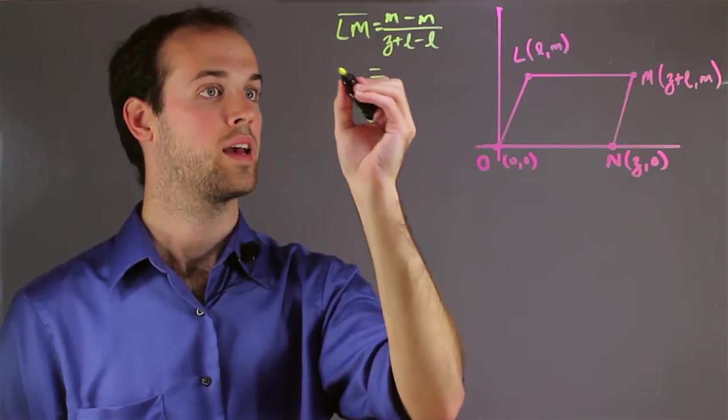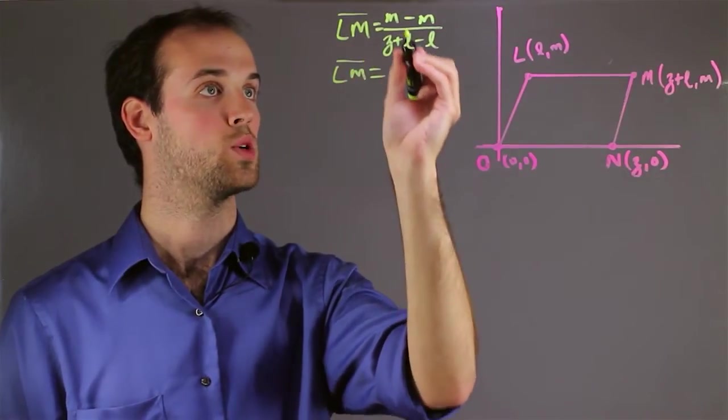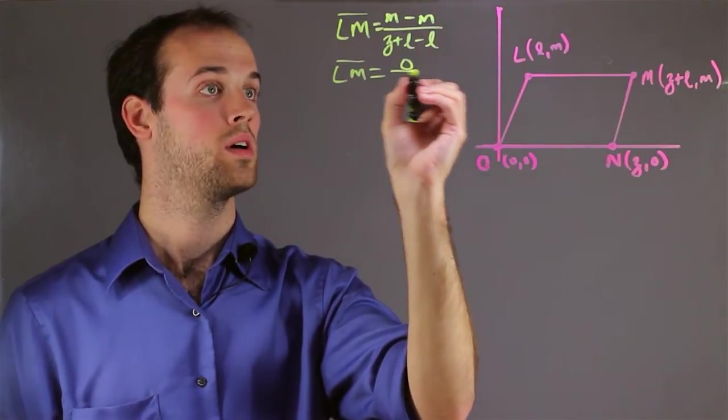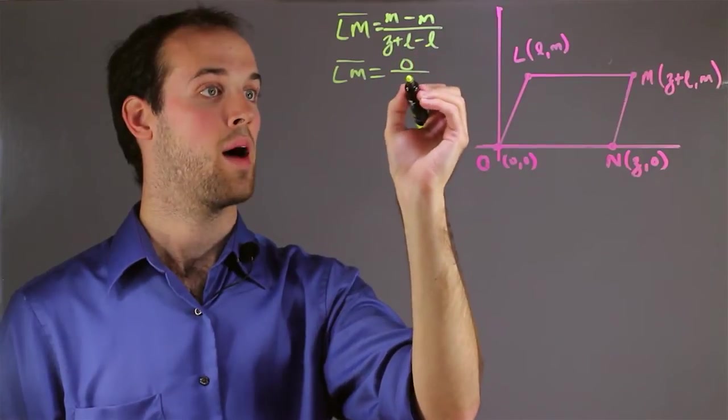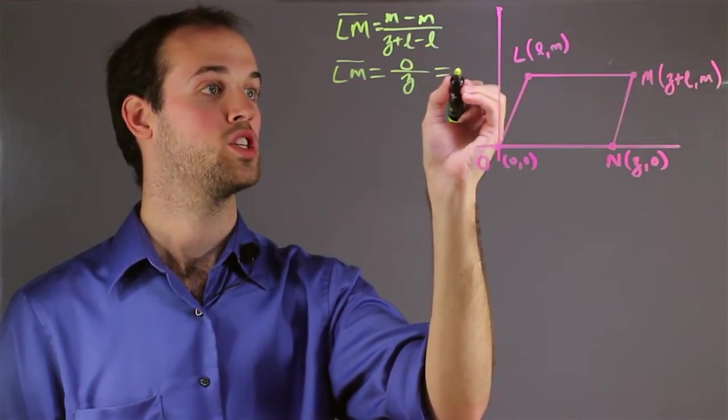Now let's simplify that, and I would get that LM is equal to M minus M, which is zero, over Z plus L minus L, which is just Z, which equals zero.